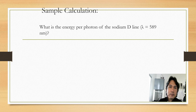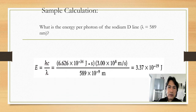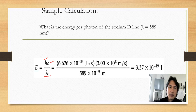You are asked to calculate the energy of a photon. What is the energy per photon of the sodium D line with a wavelength of 589 nanometers? Using the equation E = hC/λ, where h is Planck's constant and C is the speed of light divided by the wavelength, the energy is 3.37 times 10 to the negative 19 joules.